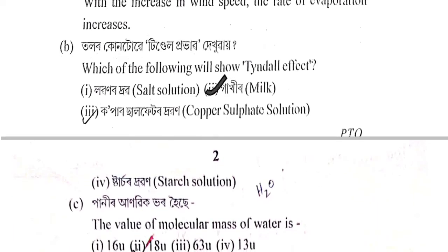Next question: Talor kuntu Tyndall prabhav dekhhuai? Which of the following will show the Tyndall effect? Option 1: lobon-or drabo (salt solution); option 2: ga khir (milk); option 3: copper sulfate; option 4: starch solution. The correct answer is option 2 — ga khir (milk).